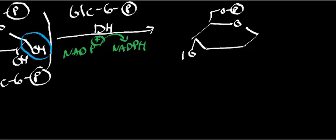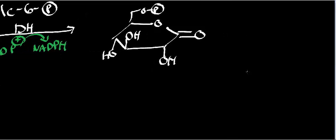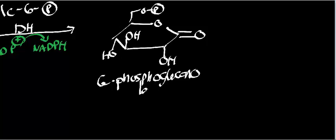What we end up with looks like this. Whenever you see the word lactone, essentially what that means is we're dealing with a cyclic ester — a cyclic ester. In this case the ester is part of a pyranose ring because it's glucose. So a lactone is essentially just a cyclic ester. This molecule is 6-phosphogluconolactone.